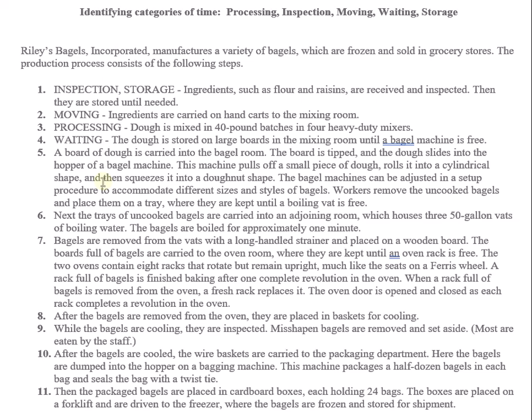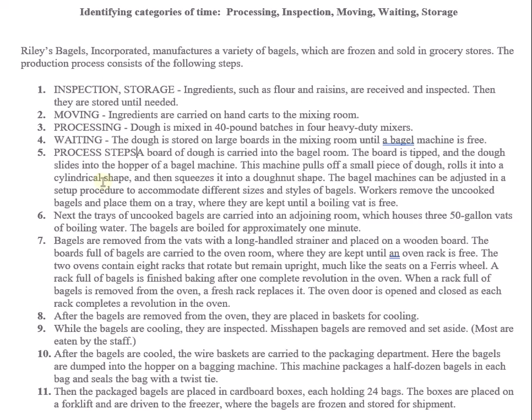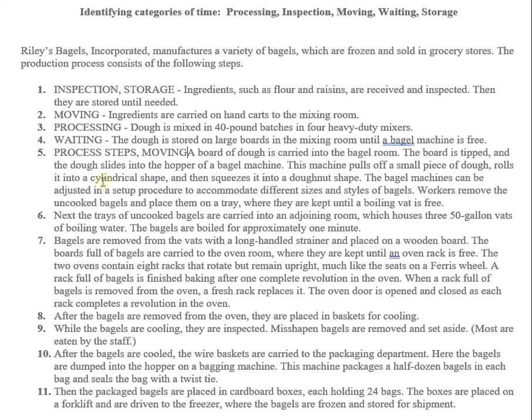Step five: a board of dough is carried into the bagel room, the board is tipped, and the dough slides into the hopper of the bagel machine. The machine pulls off a small piece of dough and rolls it. Workers remove the uncooked bagels and place them on a tray where they're kept until a boiling vat is free. Step five includes processing, moving, and waiting activities.